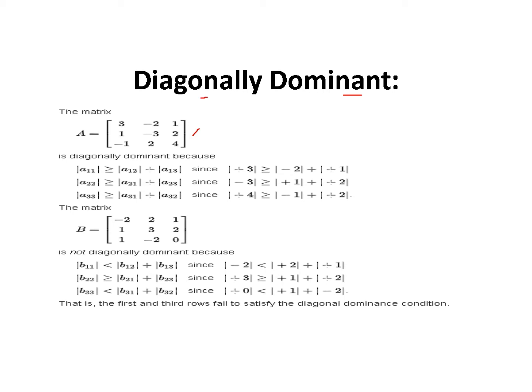Here is an example of a coefficient matrix. From this, you have to check whether A11 is greater than or equal to the absolute value of A12 plus A13 — that is the first row first element compared to the sum of the other elements in that row, ignoring signs. In this example, A11 is 3, and you check it against minus 2 plus 1.